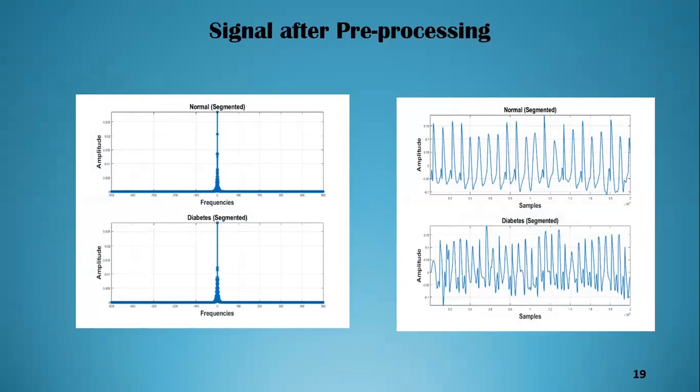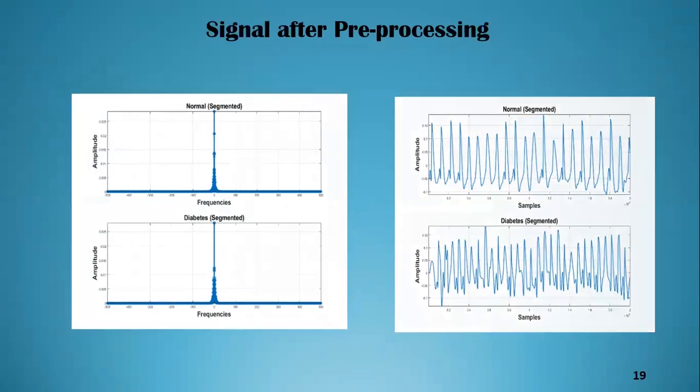ECG signals contain PQRS peaks. We can detect variations in both normal and diabetic patients through these peaks, enabling easier detection of diabetes from the ECG signal.